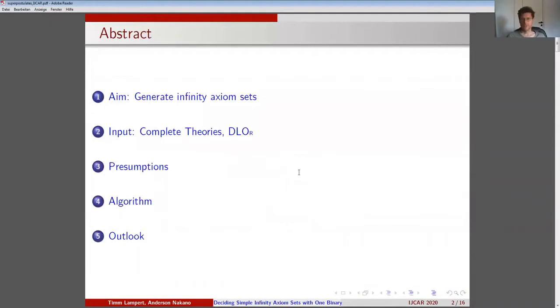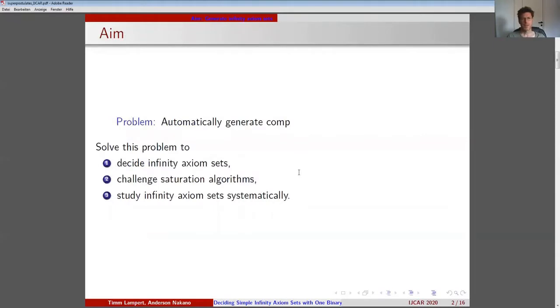We will first introduce the aim of our paper, namely to automatically generate complete infinity axiom sets. We then shortly present the theory of dense linear order as a complete infinity axiom set to start with. We will explain presumptions of our algorithm before we present it. Finally, we give an outlook for further work. The aim is to automatically generate complete infinity axiom sets of first-order logic with only one binary relation, FOLR for short.